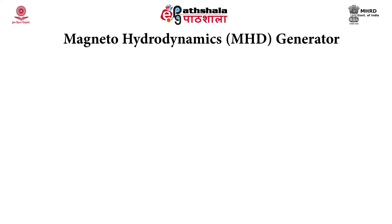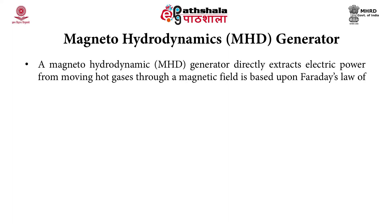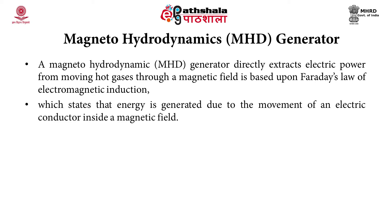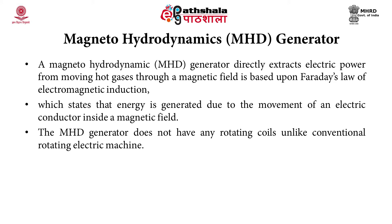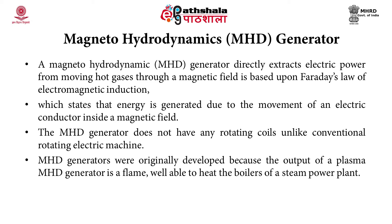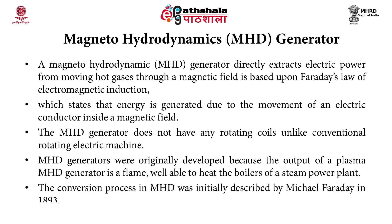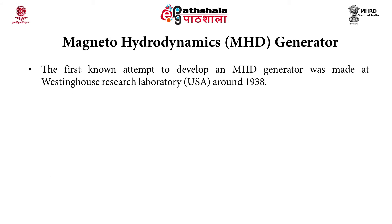An MHD generator directly extracts electric power from moving hot gases through a magnetic field, and it is based on Faraday's law of electromagnetic induction, which states that energy is generated due to the movement of an electric conductor inside a magnetic field. The MHD generator does not have any rotating coils unlike conventional rotating electric machines. These generators were originally developed because the output of a plasma MHD generator is a flame well able to heat the boilers of a steam power plant. The first known attempt to develop an MHD generator was made at Westinghouse Research Laboratory, USA, around 1938.